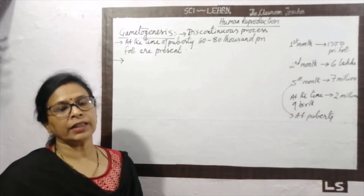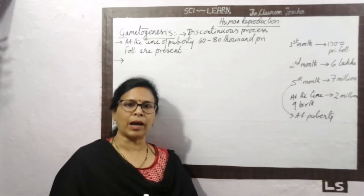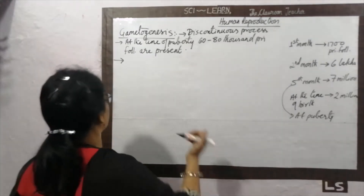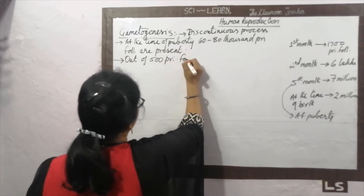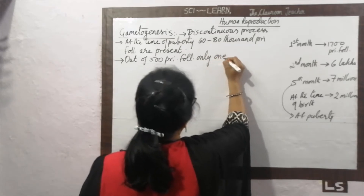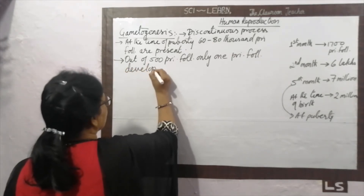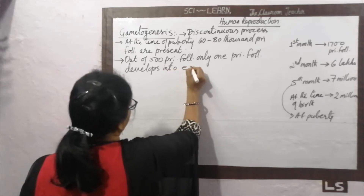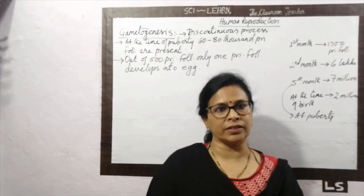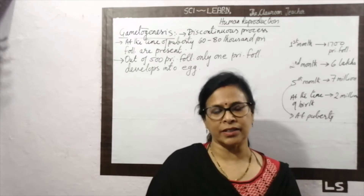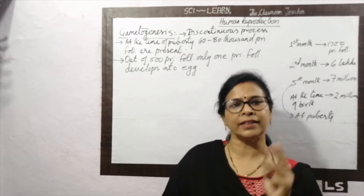At the time of puberty, about 60 to 80,000 primary follicles are present. Out of these, only 1 out of every 500 primary follicles develops into an egg. This means the number of eggs is essentially stored in the female body before birth.